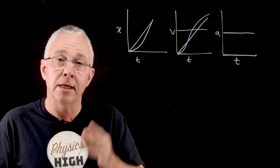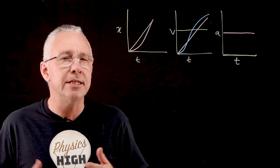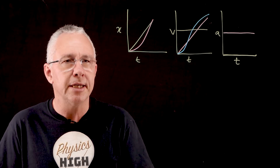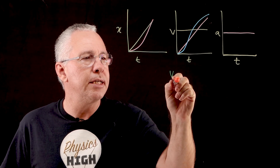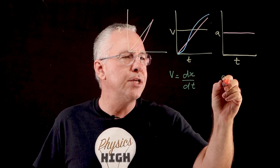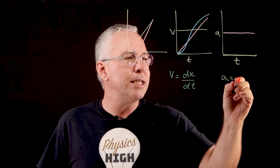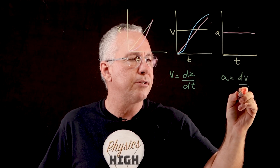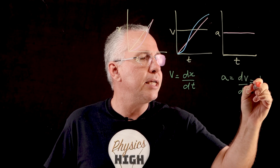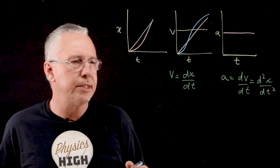This gets us to an understanding of where calculus comes in. The slope of a displacement-time graph is the derivative of the displacement — in other words, the derivative of x with respect to time gives us the velocity, so v = dx/dt. Similarly, the acceleration is equal to the slope of the velocity-time graph, which is the derivative of velocity with respect to time, dv/dt. That also means the acceleration is equal to the second derivative of x with respect to time, d²x/dt².